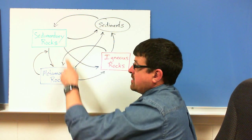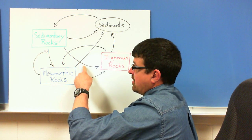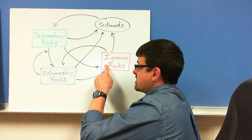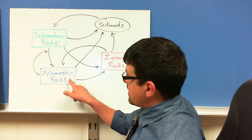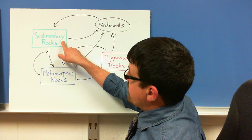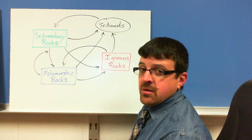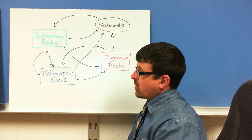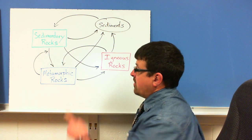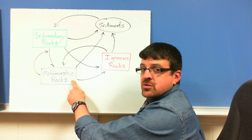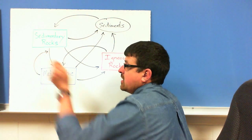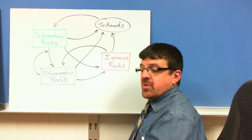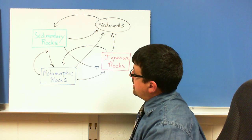If that sedimentary rock doesn't turn into a metamorphic rock but gets melted, it will solidify into an igneous rock. Same thing with a metamorphic rock — if it undergoes more heat and pressure, it can turn into another type of metamorphic rock. If it gets broken down into sediments, it'll become sedimentary. If it gets melted, it's going to become igneous. Each of these can go into the same type of rock or back to one of the other two.